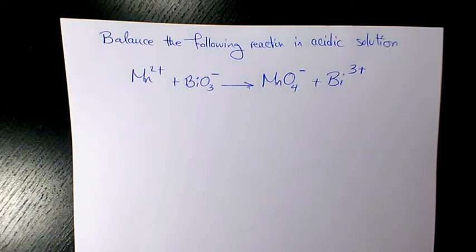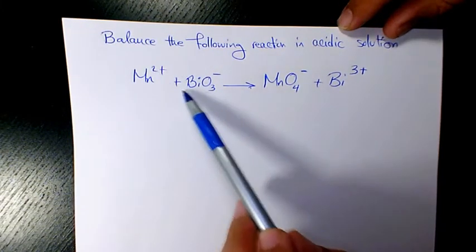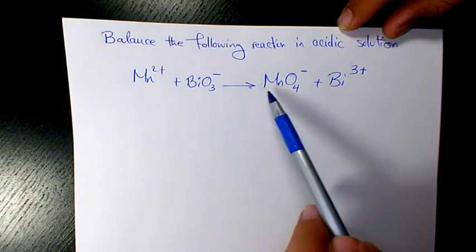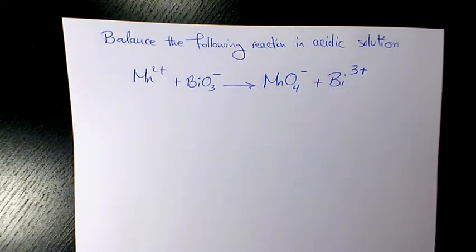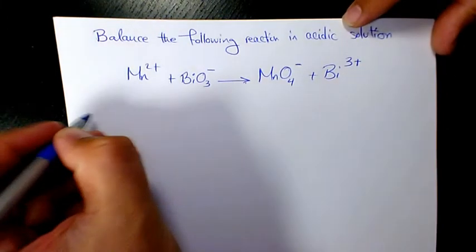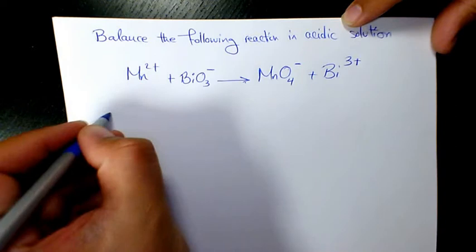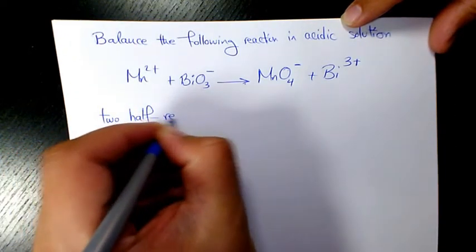What's up guys, this is Massey, welcome to another video. In this video I want to talk about balancing chemical reactions in acidic solution. This example I have right now is Mn²⁺ plus BiO₃⁻ gives MnO₄⁻ plus Bi³⁺. I want to balance it under acidic solution. First of all, I'm going to write the two half reactions.